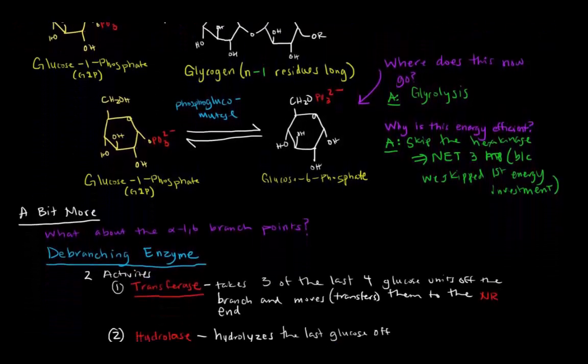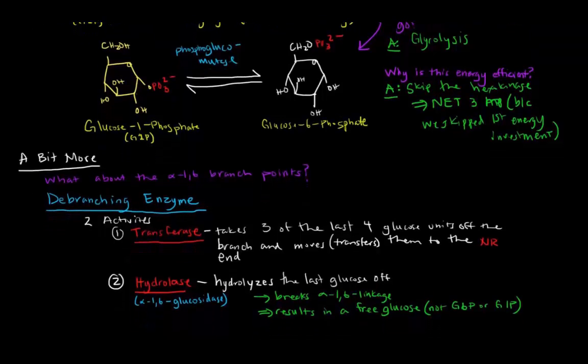As far as a bit more information about glycogen breakdown, what happens at the branch points, there's this enzyme called the debranching enzyme. So in the last video, we talked about the branching enzyme. The debranching enzyme has two different activities, one being a transferase. So basically, if we're on a particular branch point and we've nicked off a bunch of different glucoses, once there are four more, a transferase takes three of those last four off of the branch point.